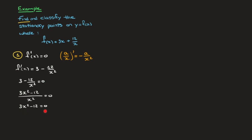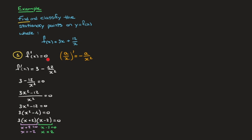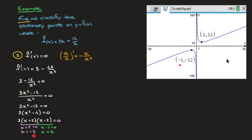We're now faced with a quadratic equation which we can solve by factoring. This is the same as 3(x² − 4) = 0. Looking at x² − 4 as x² − 2², I use the difference of two squares formula: 3(x + 2)(x − 2) = 0. Either x + 2 = 0, giving x = −2, or x − 2 = 0, giving x = 2. These two values are the solutions to f'(x) = 0 and the x-coordinates of the stationary points.